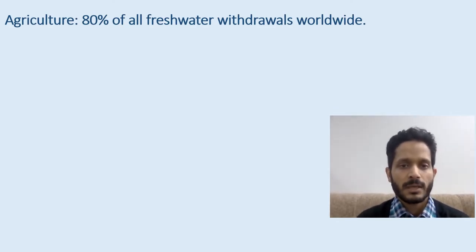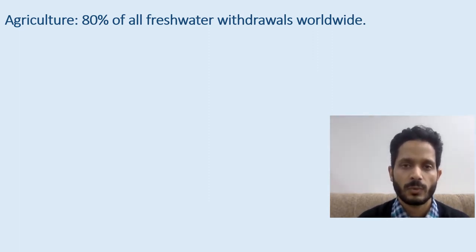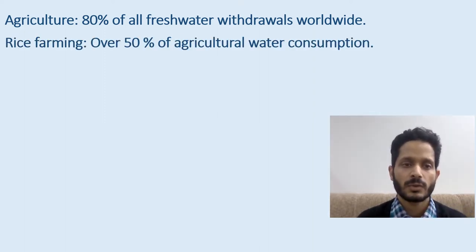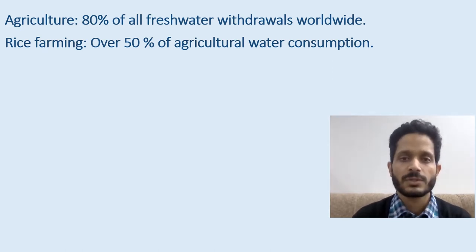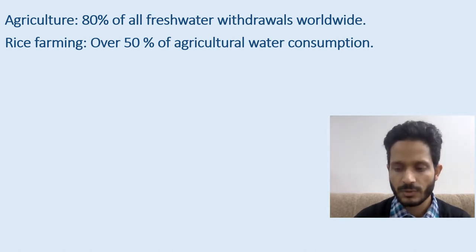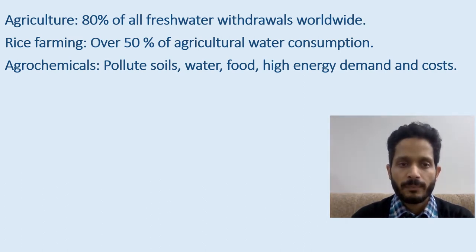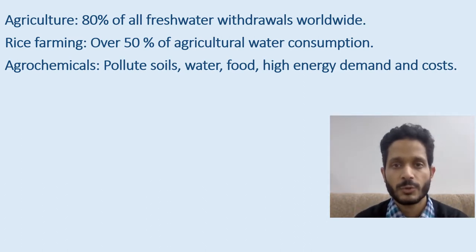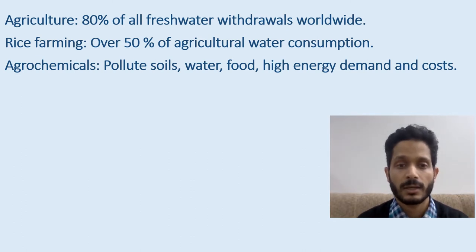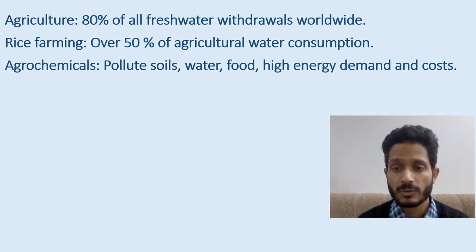Agriculture is the main consumer of freshwater withdrawals worldwide, with more than 80% of freshwater withdrawals consumed in agriculture. Of that, rice farming is the major consumer, with over 50% of agricultural water consumption accounted for by rice cultivation. Another growing problem is the use of agrochemicals in agriculture, which leads to pollution in soils, water, and food, and also leads to higher energy consumption in food production.